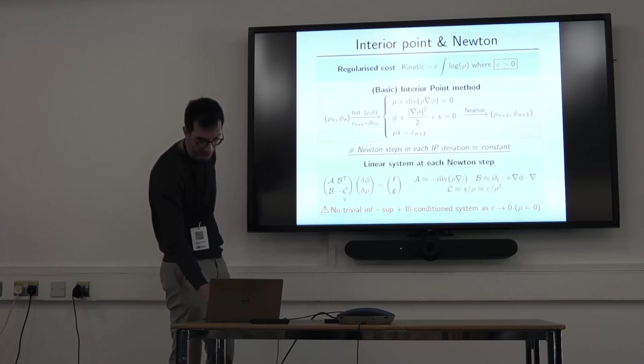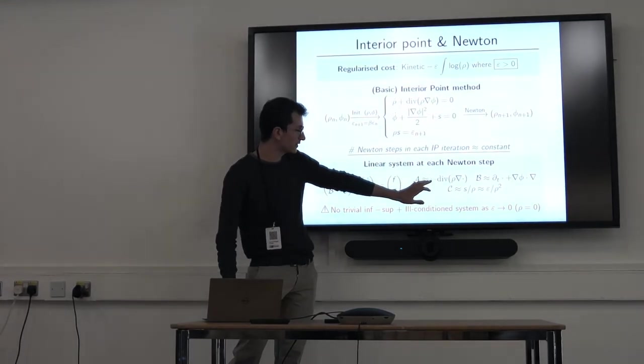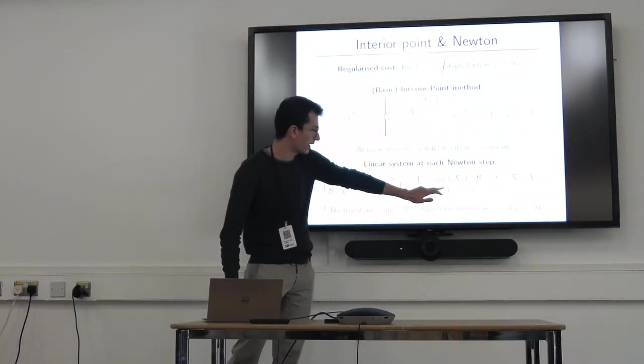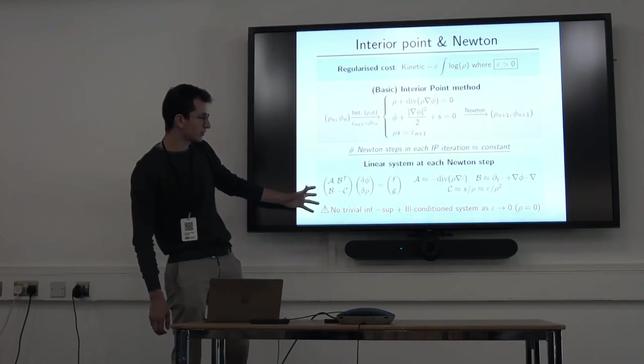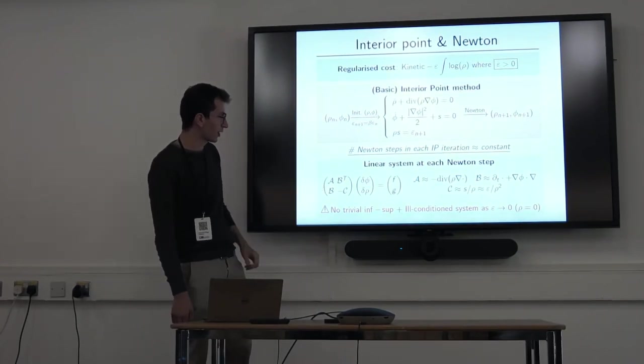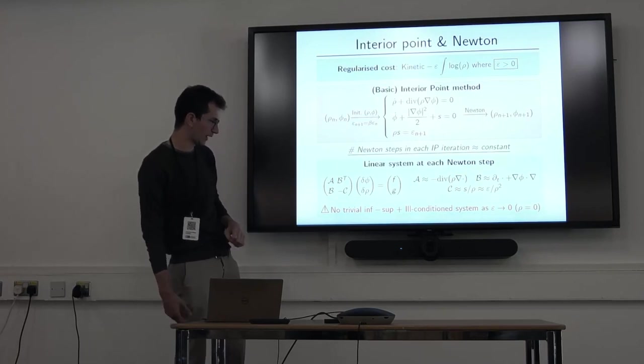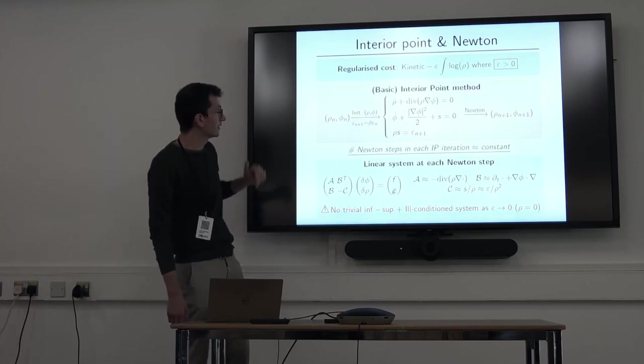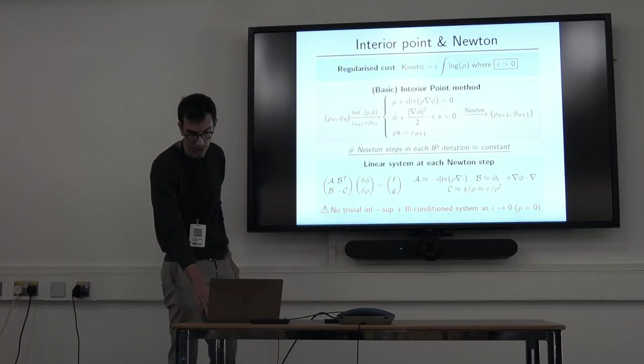So what you have to solve at the end is a system like this. Your Newton step will look like this. And again, it's a saddle point system. And again, rho and phi fixed, but it's not easy to analyze it from a numerical point of view. There's no again inf-sup condition that's trivially can be defined. And also, which is standard in interior point strategies, that the system becomes ill-conditioned as epsilon goes to zero. So we really want a good preconditioner.